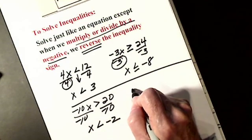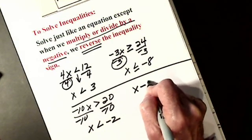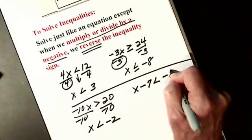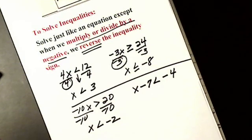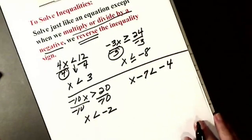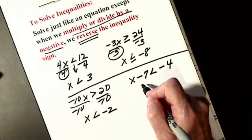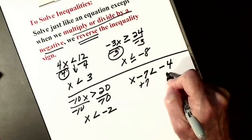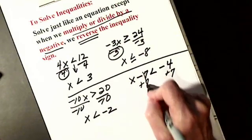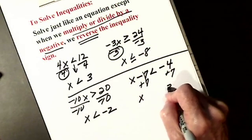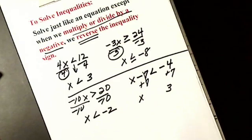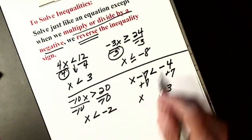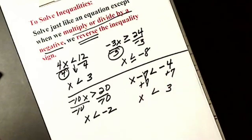Let's say I have something like this: x minus 7 is less than negative 4. I solve just like an equation. In this case, I'm going to have to add 7. I get x here, I have 3 here. Did I divide by a negative? No. I added something to both sides so it stays the same.